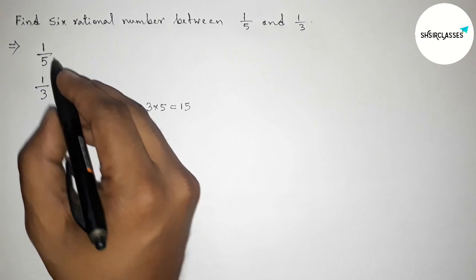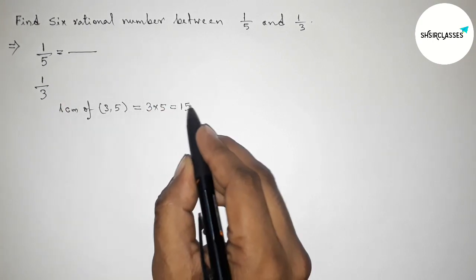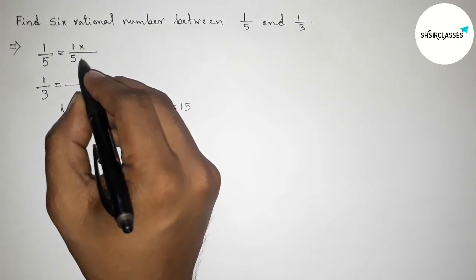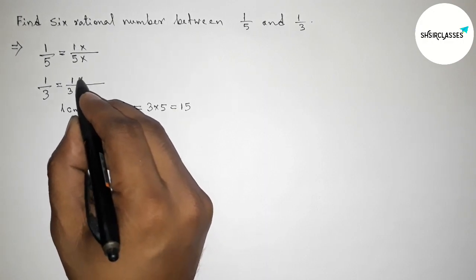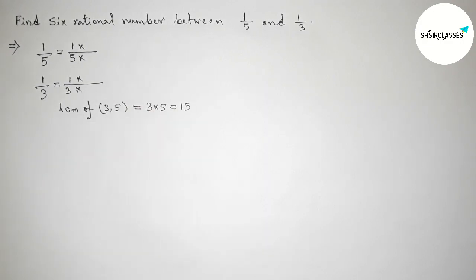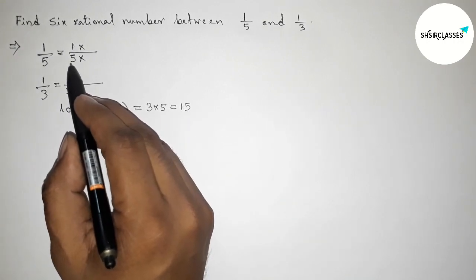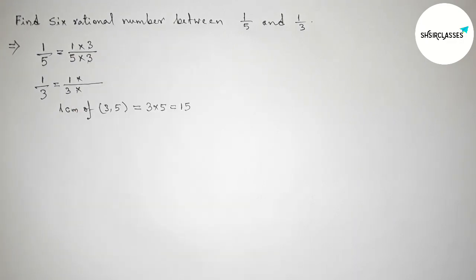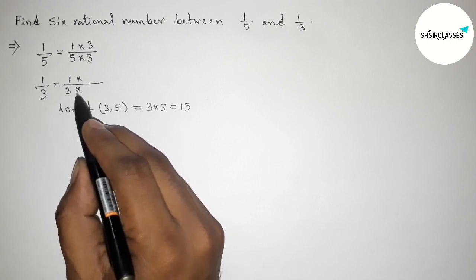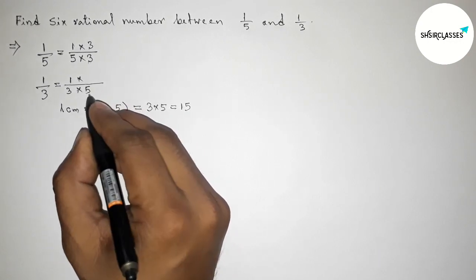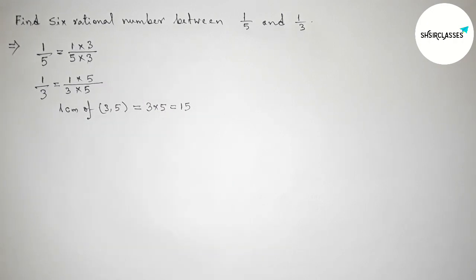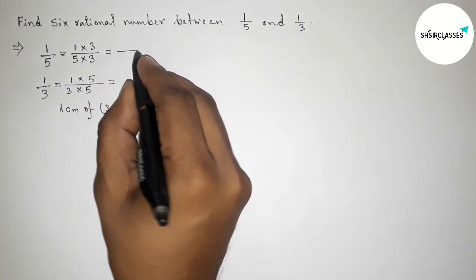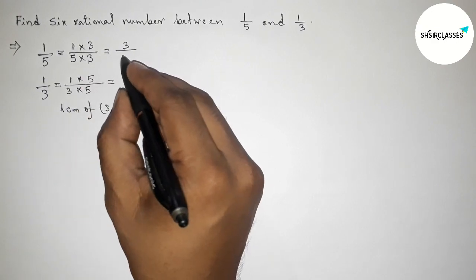We have to make the denominator 15 for both fractions. For 1/5, multiplying up and down by 3: 5 × 3 = 15. Similarly, making the denominator 15 for 1/3, multiplying up and down by 5: 3 × 5 = 15.